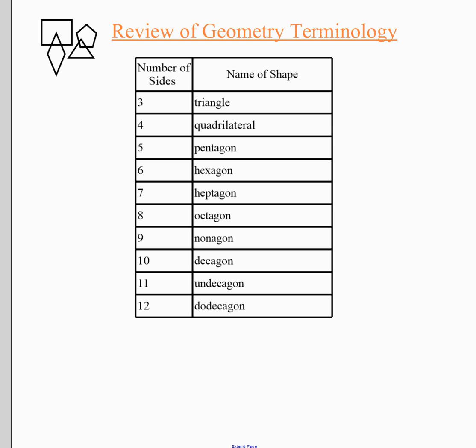The last page is a review of all the names and number of sides of different polygons — that will be helpful when using the formula. Remember: n minus 2, then times 180. For example, if asked for the interior angles of a decagon, you need to know that a decagon has 10 sides.